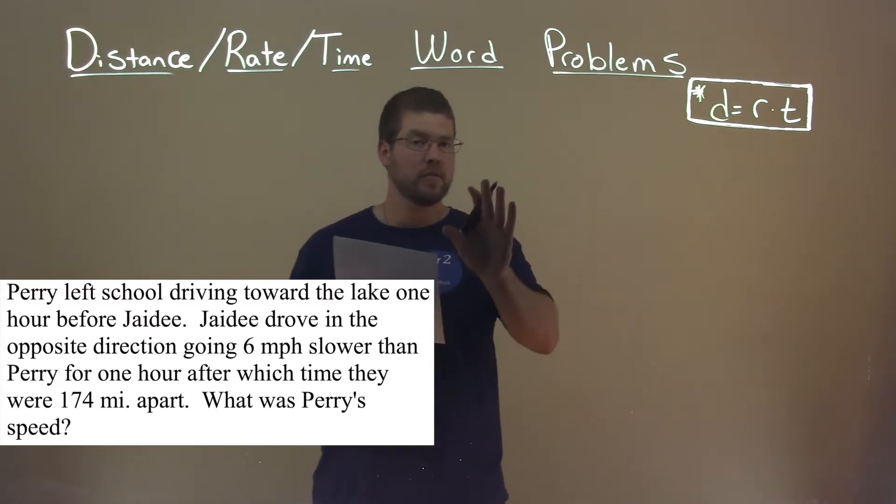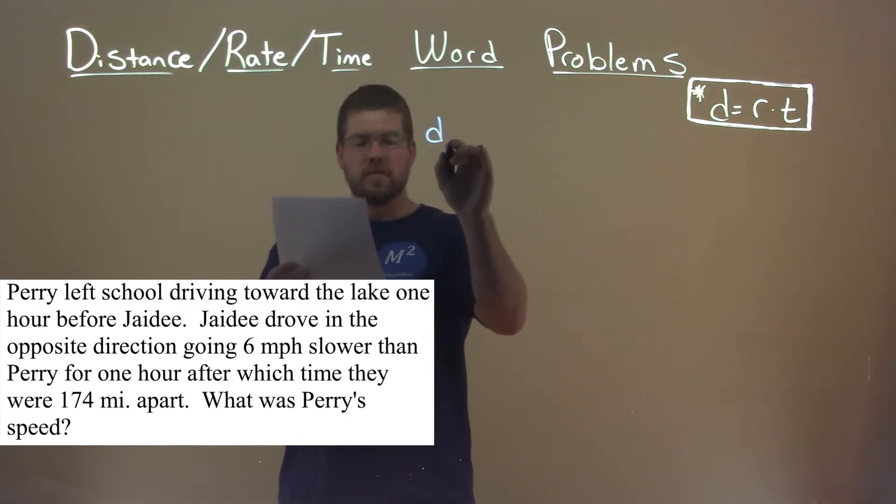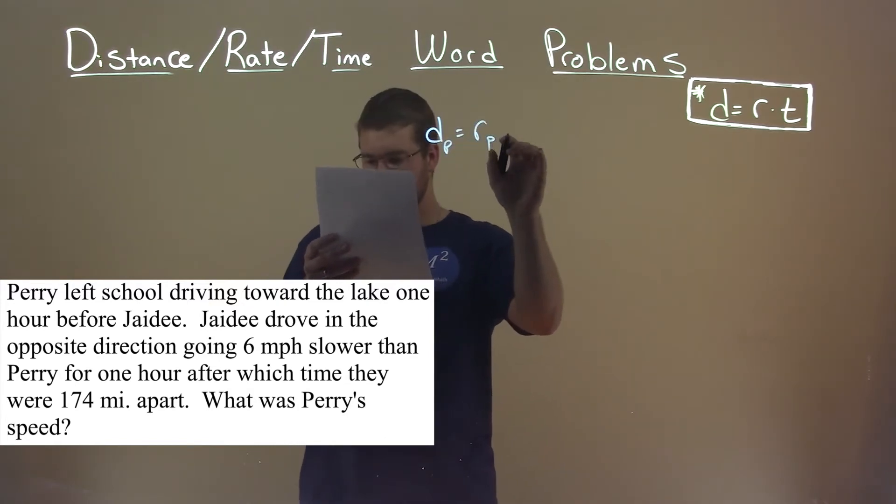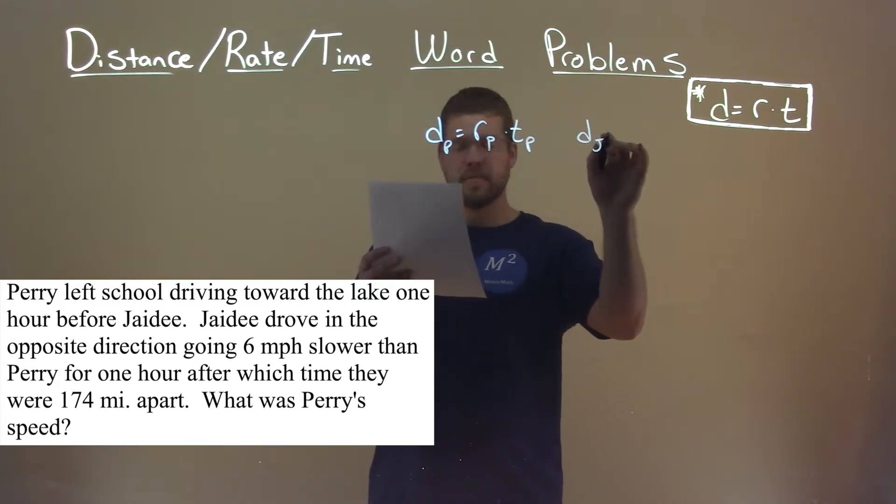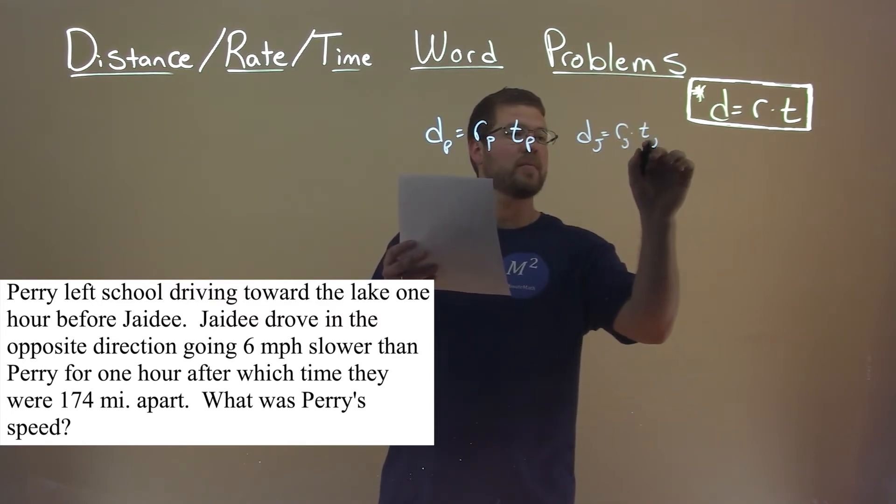So I'm going to break this down into two distance, rate, time equations. Distance of Perry is equal to the rate of Perry times the time of Perry. The distance of JD is equal to the rate of JD times the time of JD.